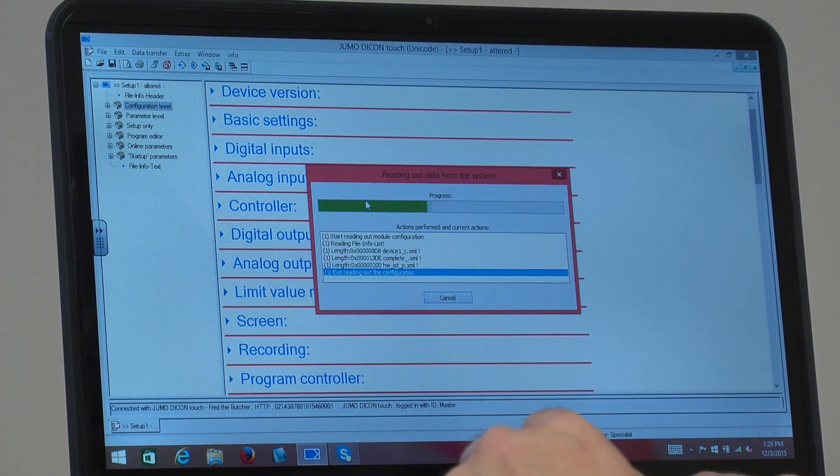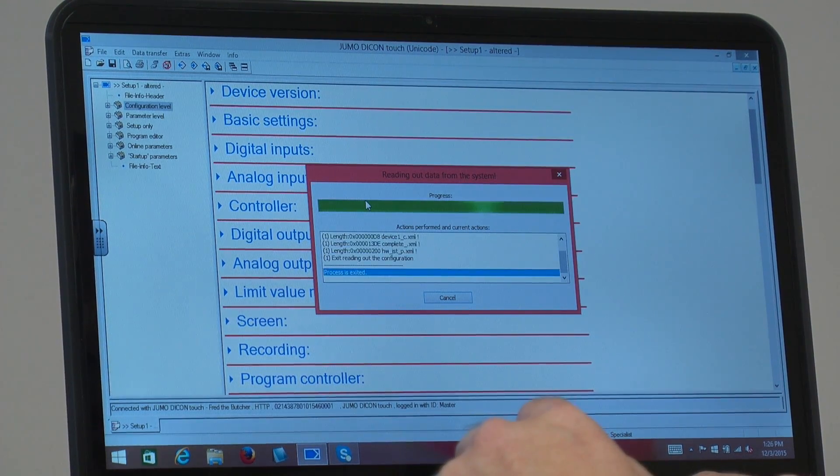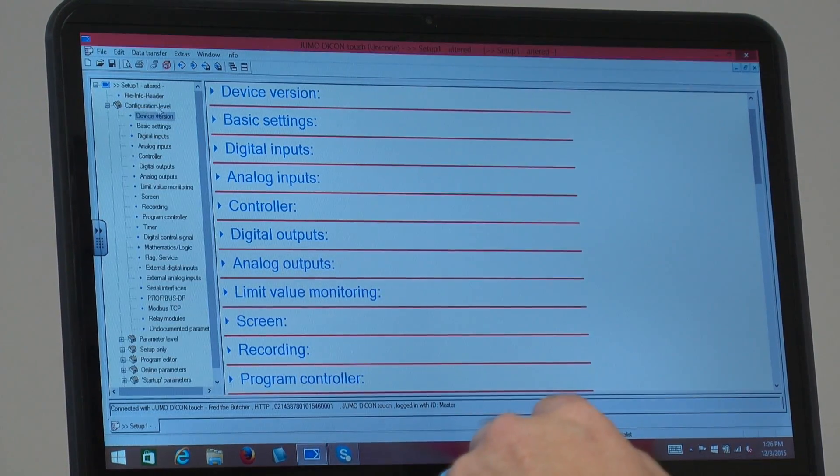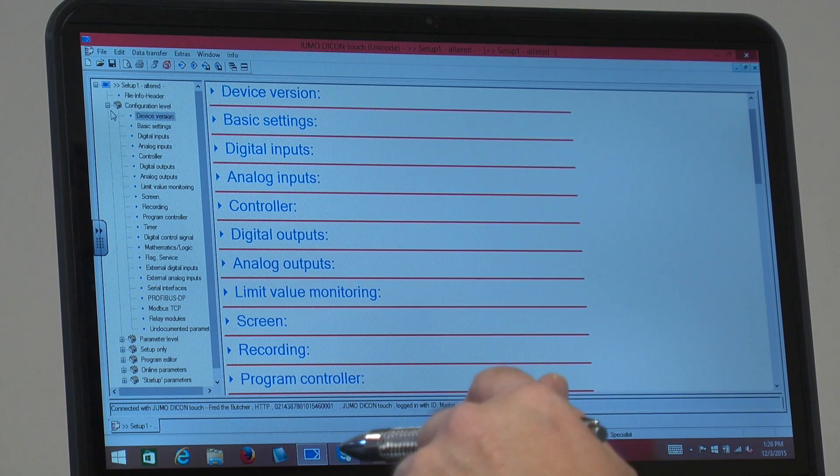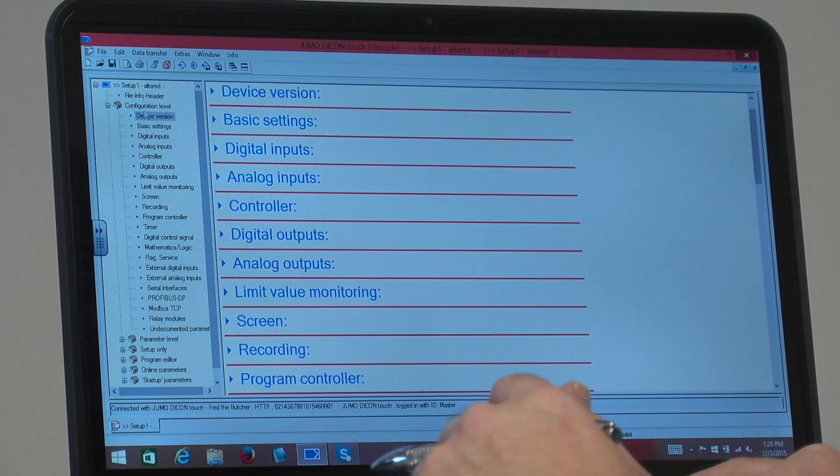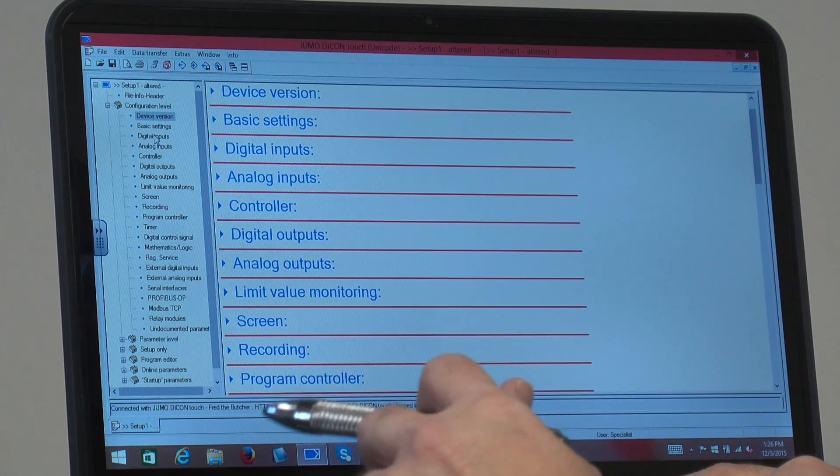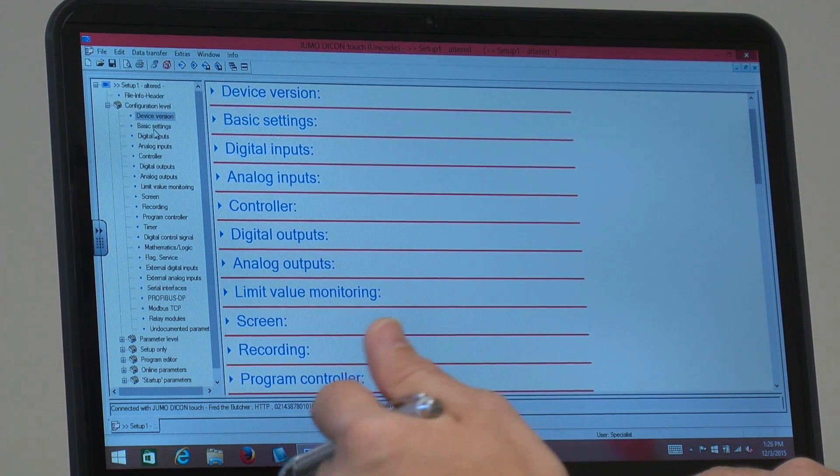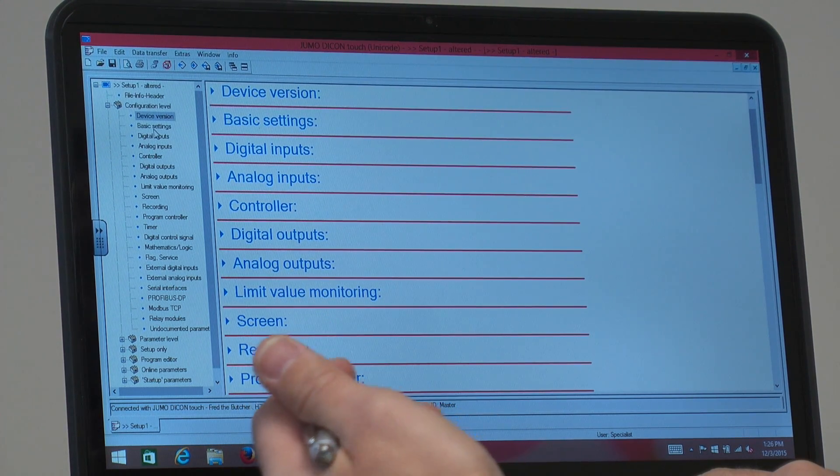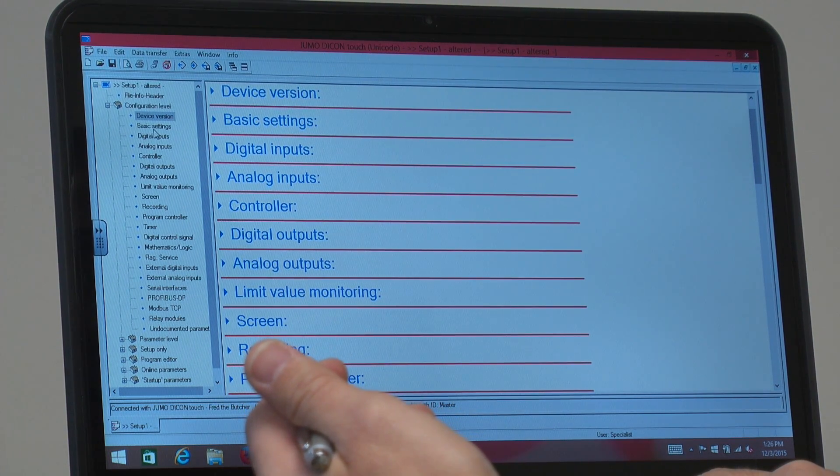All the information that's in the unit currently is being pulled in. And now we can start looking at the different menus. The core menus are going to be in this configuration level. The first few menus here you're going to set up your inputs, your outputs, what type of control you want, if it's going to be a cascade control or if it's going to be just a standard PID controller.